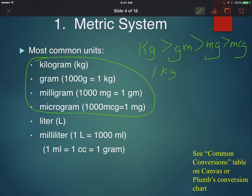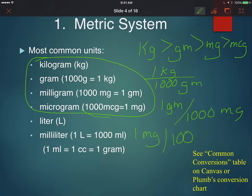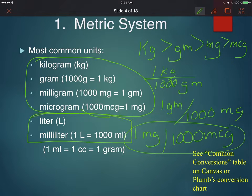One kilogram is equivalent to a thousand grams, and one gram is equivalent to a thousand milligrams. And down here, one milligram is equivalent to a thousand micrograms. The liter and the milliliter are volume measures. One liter is equivalent to a thousand milliliters.